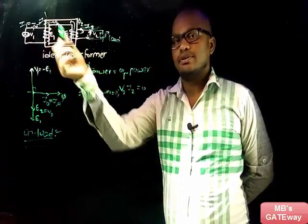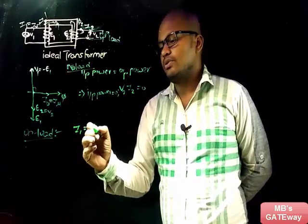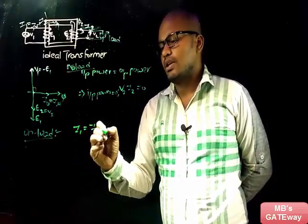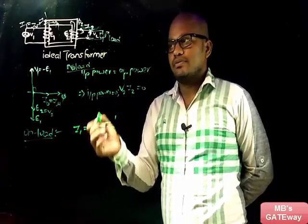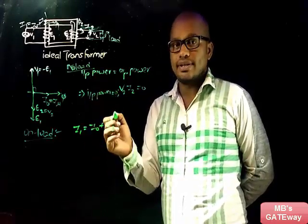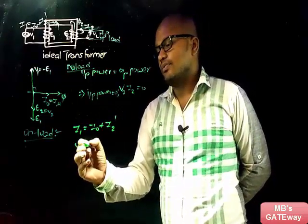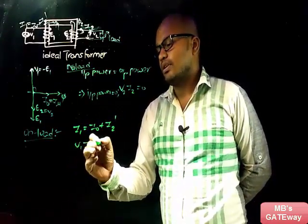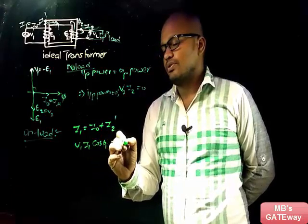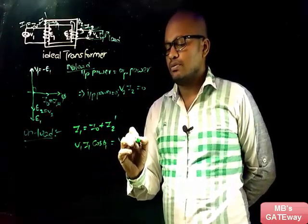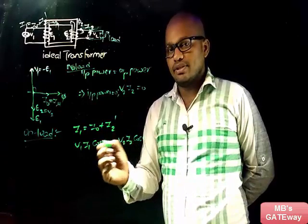To maintain the induced EMF, the transformer will draw more input current from the supply. That extra input current drawn is I2'. So input current I1 is equal to I₀ plus I2'. In the ideal transformer, input power equals output power: V1·I1·cos(phi1) equals V2·I2·cos(phi2).